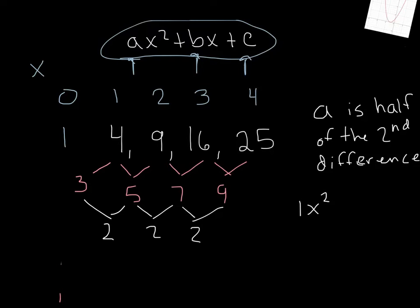So now we've got 1x squared plus bx, let me write this in the same color, plus bx plus 1. So now all we have to do is find b. We found a because it was half a second difference. We found c because it's the y-intercept or the 0 term. And now let's go about finding b. And for me, the easiest way to calculate b is to set what I know equal to a number. So let's look at, let's do this one. Let's look at the third term.